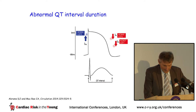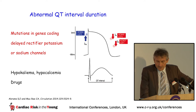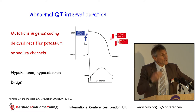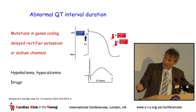Abnormal QT interval durations are due to mutations in genes coding mainly for delayed rectifier potassium or sodium channels. However, we must keep in mind that QT duration can also be prolonged in cases of hypokalemia, hypocalcemia, or use of certain drugs.